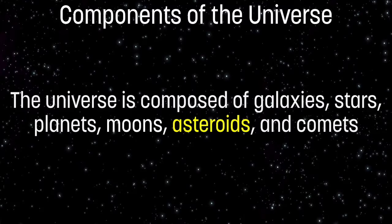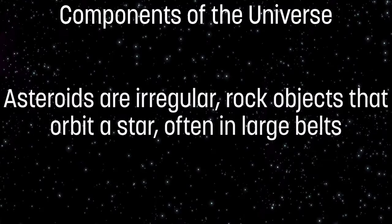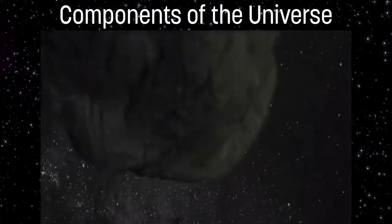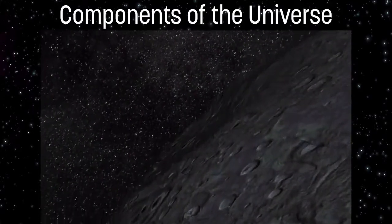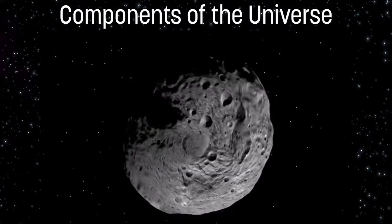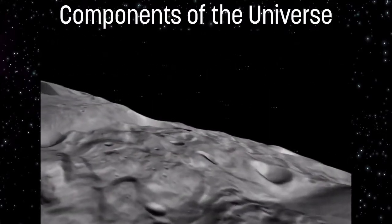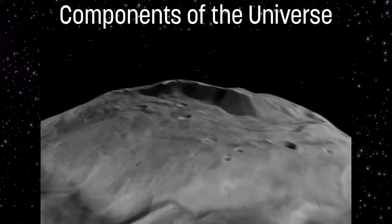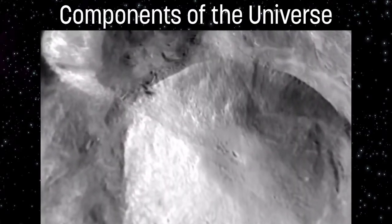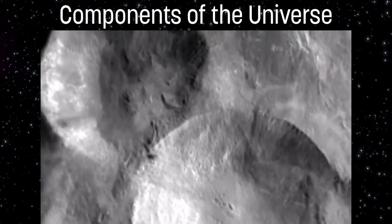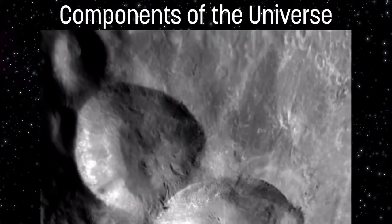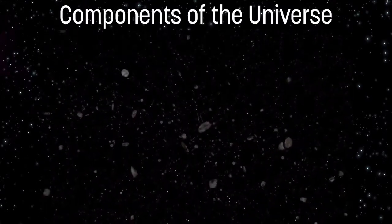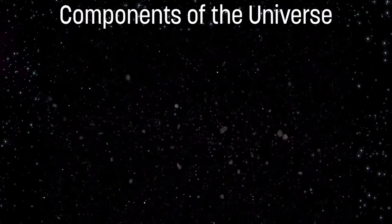Our next component are asteroids. Asteroids are irregular rock objects that orbit a star, often in large belts. An asteroid is a solid rocky and/or metallic body that independently orbits the sun. Asteroids have irregular shapes except for the large ones, which are spherical, but they don't have an atmosphere. A large percentage of the thousands of known asteroids are in orbits between Mars and Jupiter. Asteroids are sometimes called minor planets, and they can have a huge impact on our planet — a small gravitational tug can send an asteroid hurtling toward Earth, causing devastating circumstances.